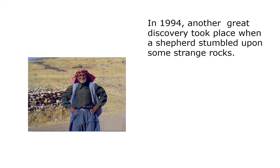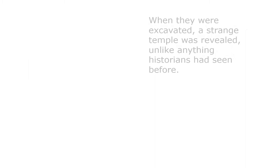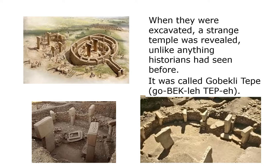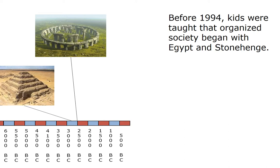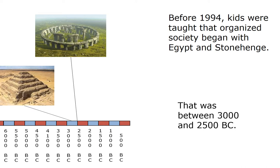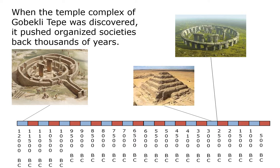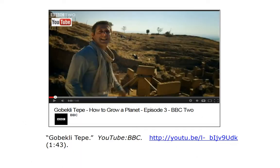Gobekli Tepe: in 1994, another great discovery took place when a shepherd stumbled upon some strange rocks. When they excavated, a strange temple was revealed unlike anything historians had ever seen before — it's called Gobekli Tepe. Before 1994, people were taught that organized society began with Egypt and Stonehenge, between 3000 and 2500 BC. When the temple complex of Gobekli Tepe was discovered, it pushed organized societies back thousands of years.